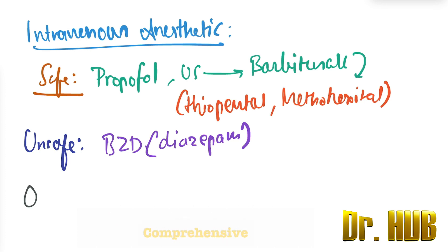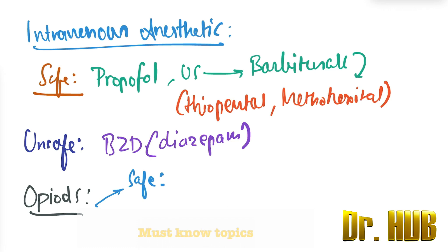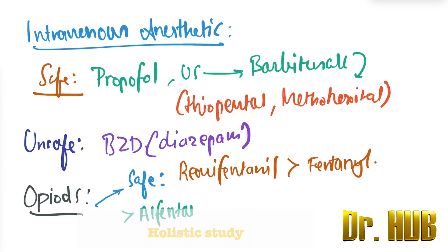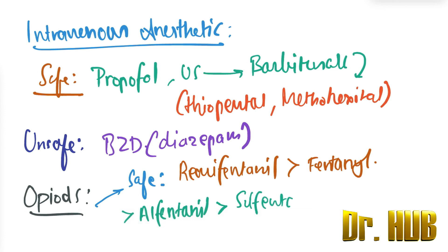Next we jump to opioids. Under the safe opioid category, remifentanil is the safest. The order of safety is: remifentanil, which is greater than fentanyl, which is greater than alfentanil, and greater than sufentanil. So the sequence is remifentanil, followed by fentanyl, then alfentanil and sufentanil.